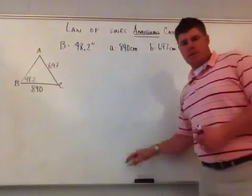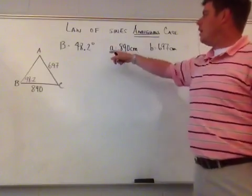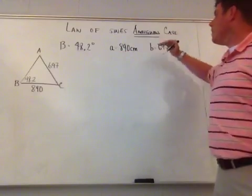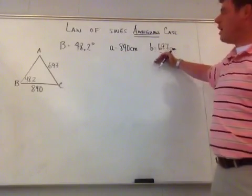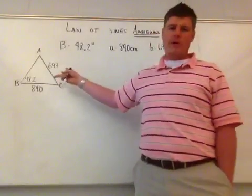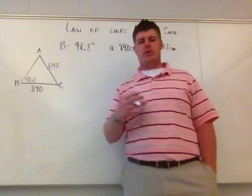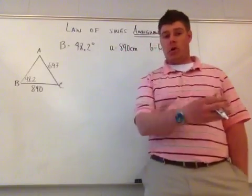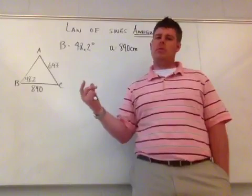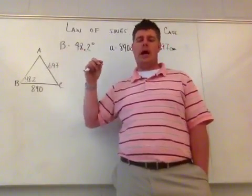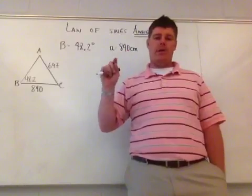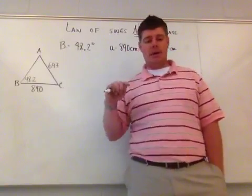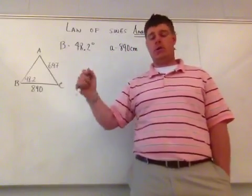Let's go to this particular problem. Angle B is 48.2 degrees, side a is 890 centimeters, and side b is 697 centimeters. I always draw a triangle to determine which form I have — is it the ambiguous case, or do I need to use the Law of Cosines? Remember: angle-angle-side and angle-side-angle and side-side-angle are all Law of Sines.